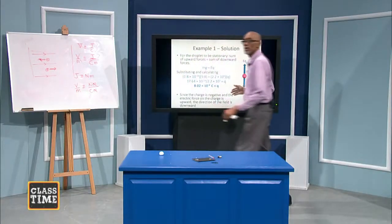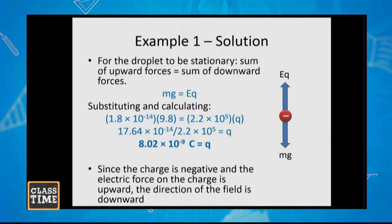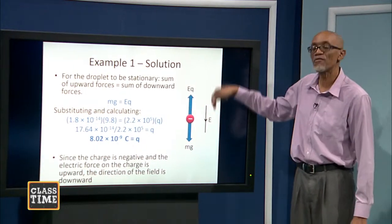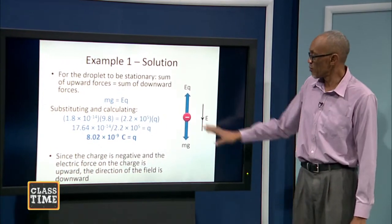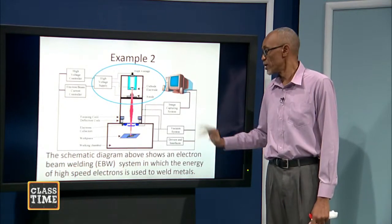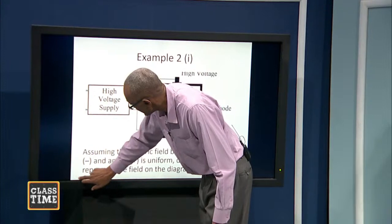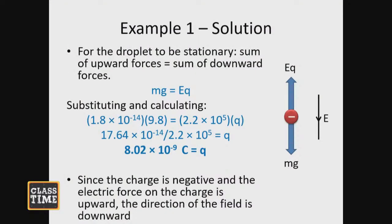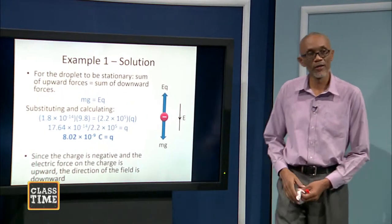In this question, the force on the charge is upwards and the charge is negative. If the force on the charge is upwards, it means the field must be downwards, because the charge is negative — so the direction of the electric field is downward. If the charge were positive, then the electric field would have to be upward in order to cause the required balance of forces. That's example one.